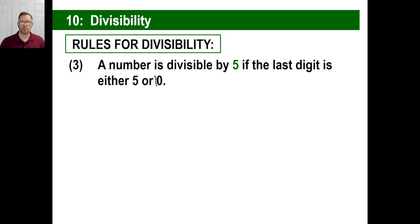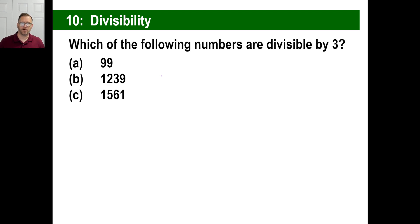In fact, any multiple of 10, 10, 20, 30, 40, any of those are also divisible by 5 as well. The number is divisible by 10 if the last digit is a 0. So that's pretty obvious. Let's look at this.